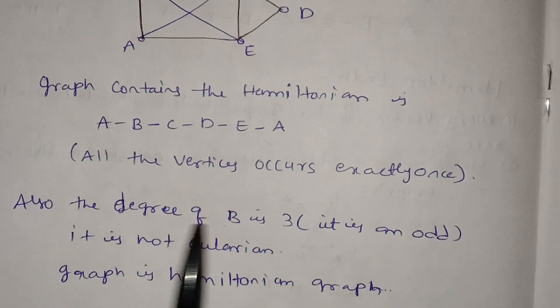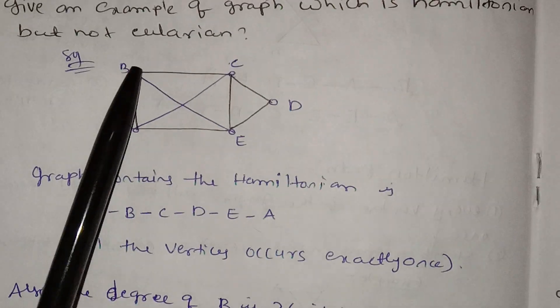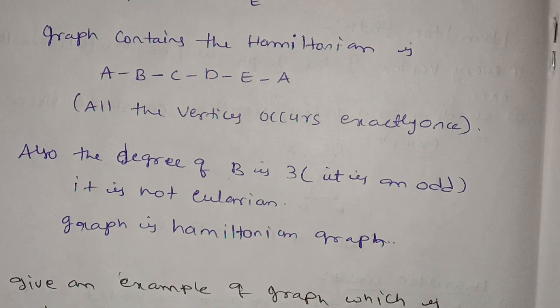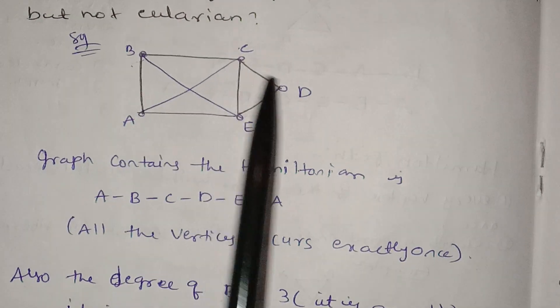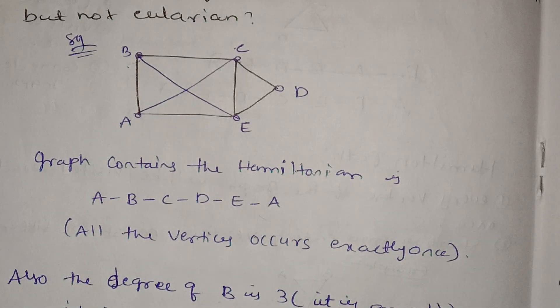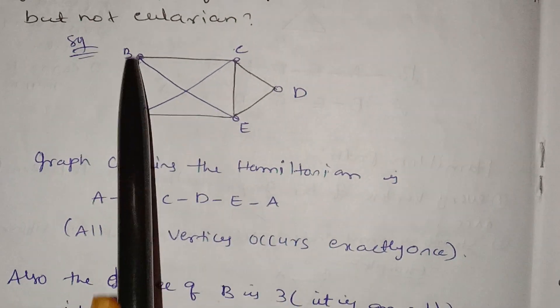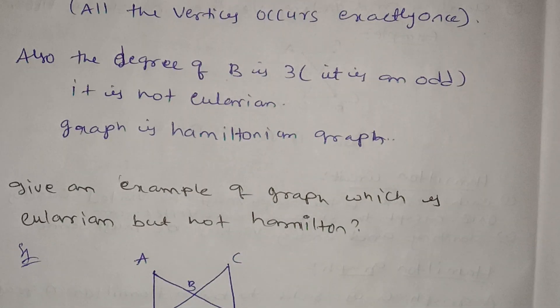The degree of vertex B is 3, which is odd and not even, so the degree condition for Eulerian is not satisfied. Since the degree of B is 3 and is not even, this graph is not Eulerian.